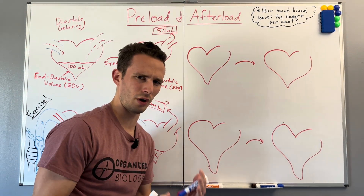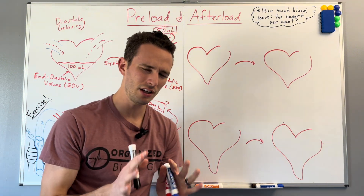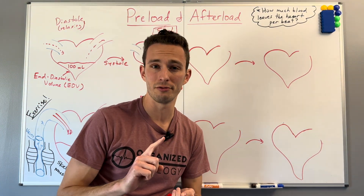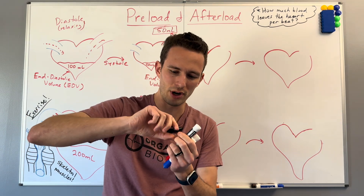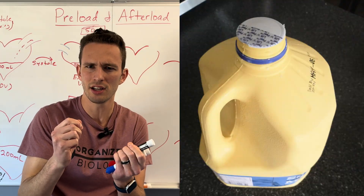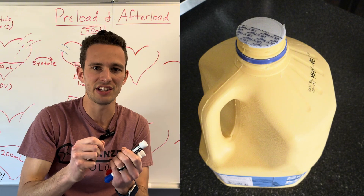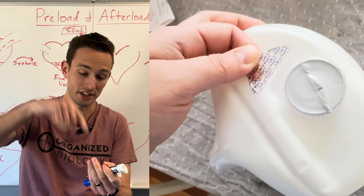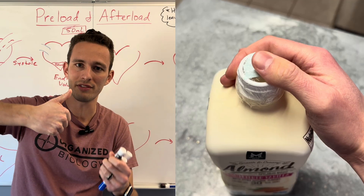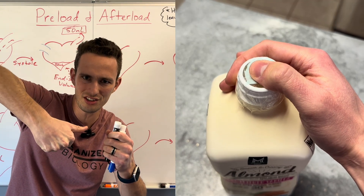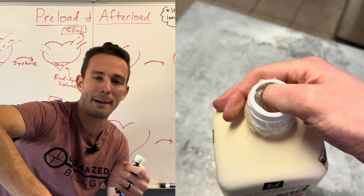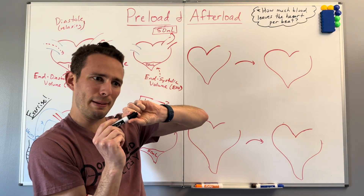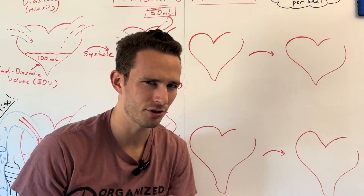Preload is like a bow and arrow: the more you stretch it, the more it'll contract back, the more blood will exit the heart. Now, afterload is usually the peskier one. Have you ever opened up an almond milk gallon — they have those little tabs on top where you flip them up. You're supposed to peel them off nicely, but they never do. So you have to push your thumb into the seal and push it really hard until it pops right open. That's how afterload works.